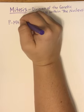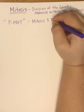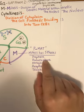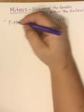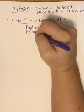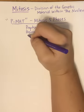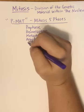When asked about the five phases, you should always say P-MAT. The five phases are prophase, prometaphase, metaphase, anaphase, and telophase. These are them in order. You need to know them in order and understand what's going on in each phase.